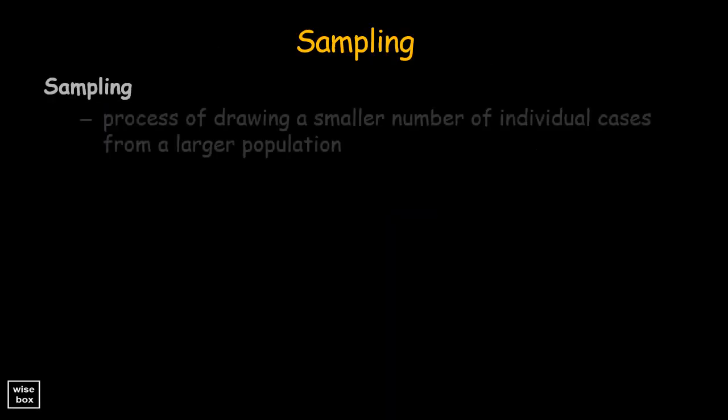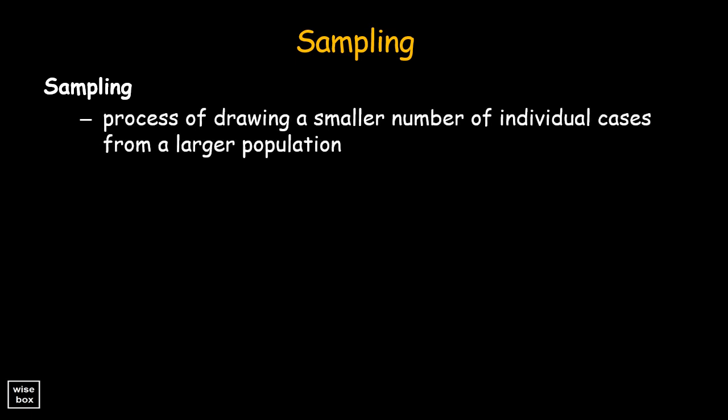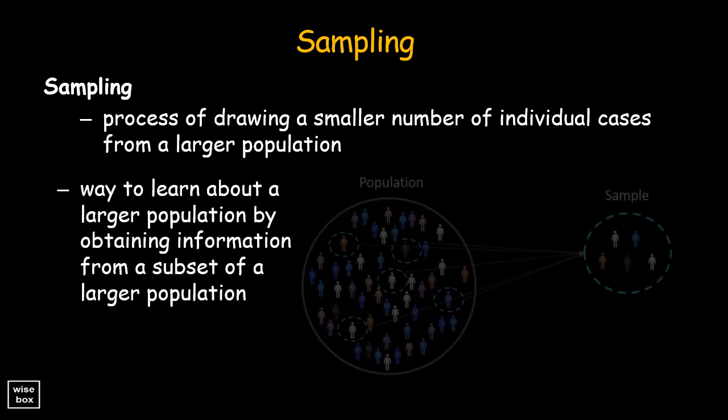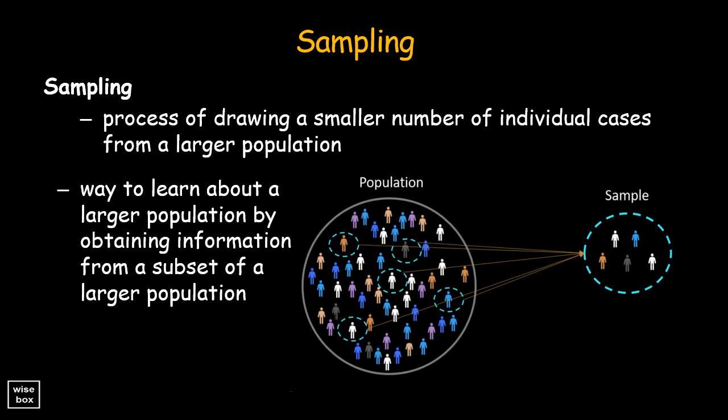Sampling is the process of drawing a smaller number of individual cases from a larger population. It is a way to learn about a larger population by obtaining information from a subset of a larger population.